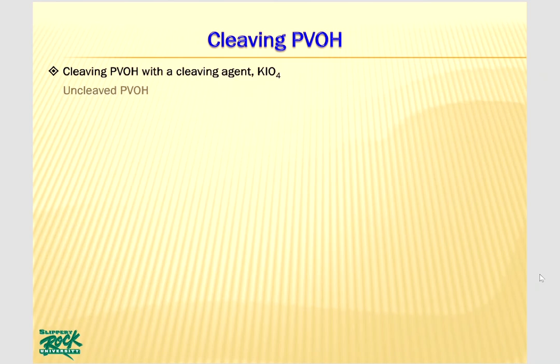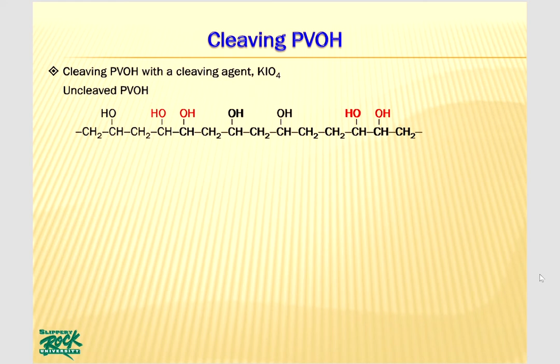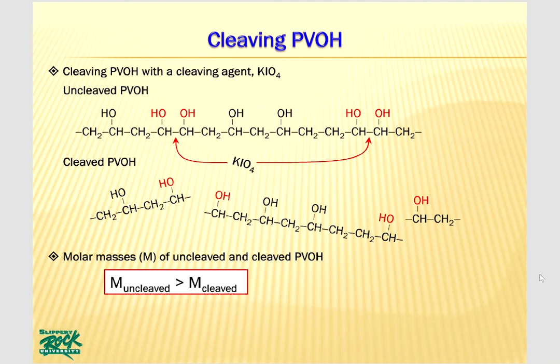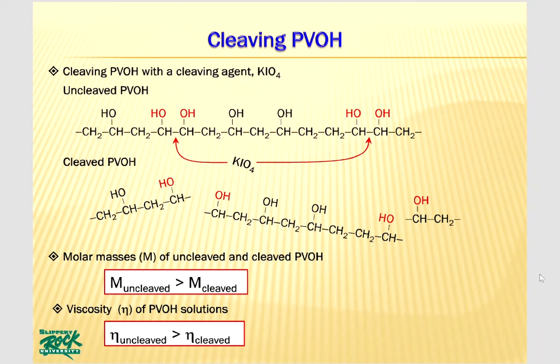Polyvinyl alcohol contains a small number of head-to-head linkages. KIO4 is a good oxidizing agent and it will be used as a cleaving agent. It will selectively cleave the PVOH molecule at the head-to-head linkages. Without doubt, the molar mass of uncleaved PVOH is greater than the molar mass of cleaved PVOH, and the viscosity of uncleaved PVOH solution is greater than the viscosity of cleaved PVOH solution, as long as the concentrations of both solutions are the same.